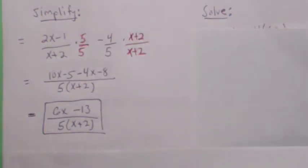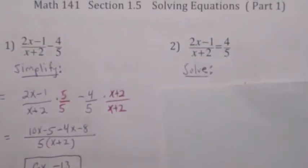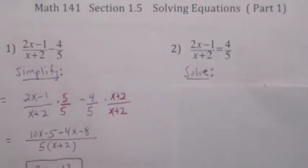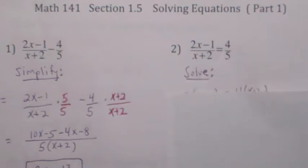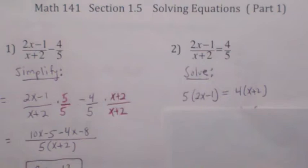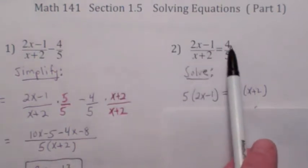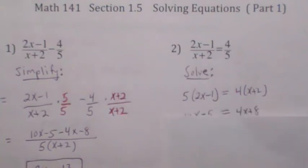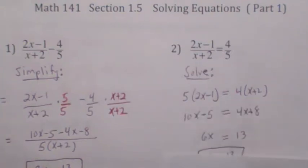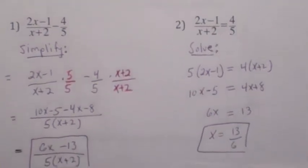Now when you have the equation, this is actually a special type of equation — this is called a proportion. A proportion is when you have two fractions that are equal to each other. When you have a proportion you can actually cross multiply when you solve it. 5 times the quantity 2x minus 1 equals 4 times the quantity x plus 2. Use the distributive law, get all the x's on one side, and divide by 6 — so there's your solution.